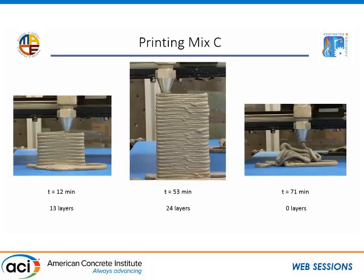For mix C, we see a similar behavior to mix B — and again, that's because we made these two mixtures B and C to have similar surface areas. We get similar performance in terms of buildability, printing at a slightly earlier time. The structures look much the same, the failure modes are the same, and the end result is these spaghetti-looking structures.